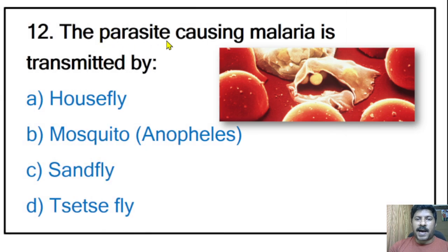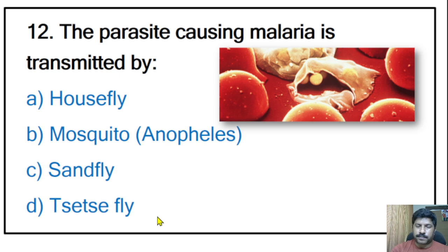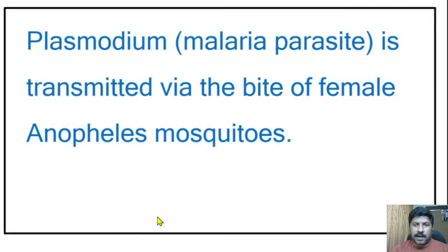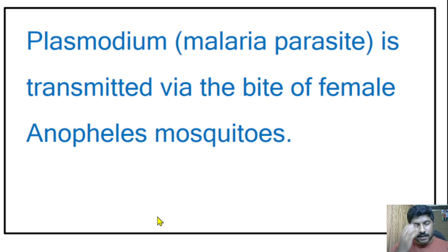Twelfth question: the parasite causing malaria is transmitted by housefly, mosquito, sandfly, or tsetse fly? The correct answer is the Anopheles mosquito. Plasmodium is the malarial parasite transmitted through female Anopheles mosquitoes. There are different kinds of Plasmodium, and all are transmitted through Anopheles mosquitoes.